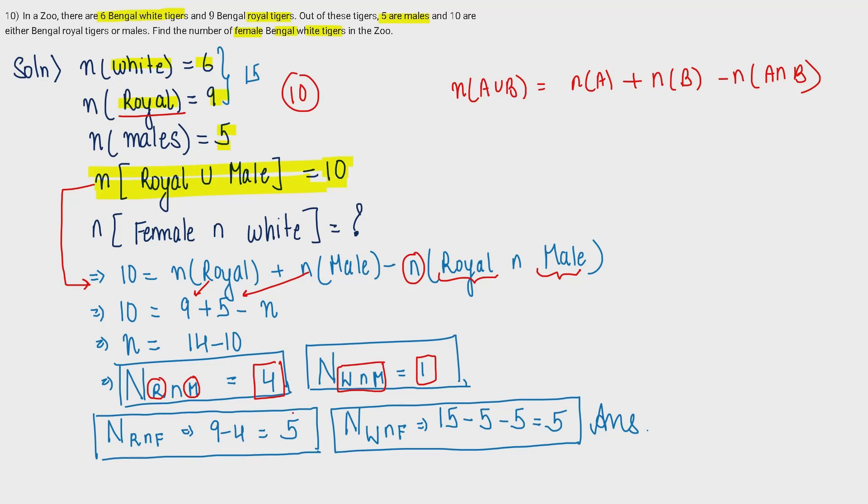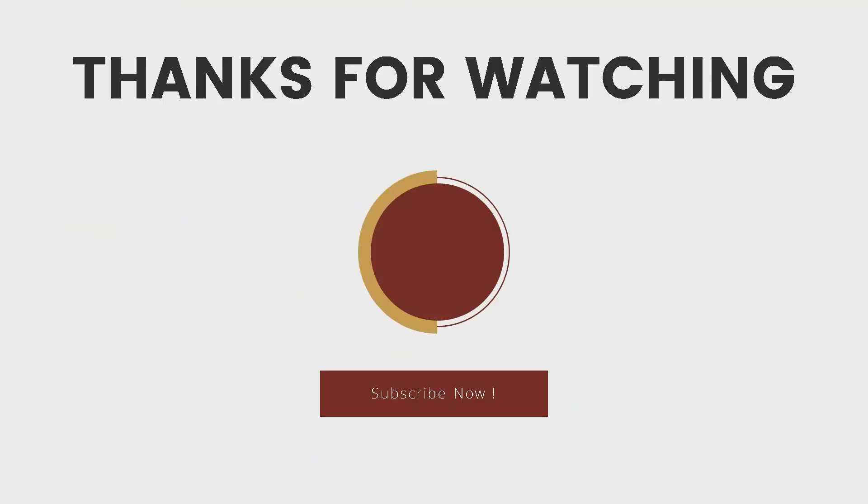So out of 15 I have 5 as male, so basically I have 10 female tigers. Now I know that there are 4 royal male tigers, so the other tigers in the royal group will be female. So 9 minus 4, that is 5, so 5 will be female tigers in the royal tiger group. I need to find the number of females in white tigers. So that will be 10 minus 5, that is 5. There are different approaches - I didn't even need to find this, because when I figured out that the total number of males in the white tigers is 1 and total number of white tigers are 6, the rest will be female. So 6 minus 1, that is 5. So anyhow you will get 5 female white tigers. That's all in this video. If you learned something new, then don't forget to subscribe to the channel and support us.